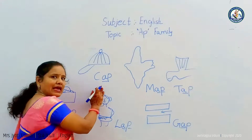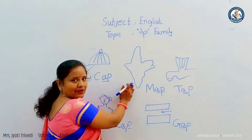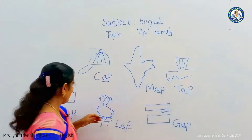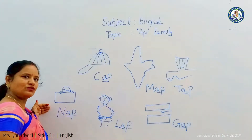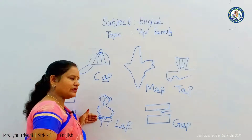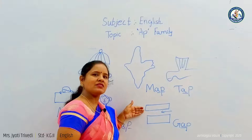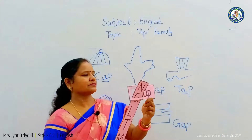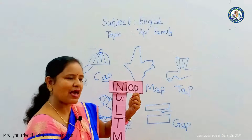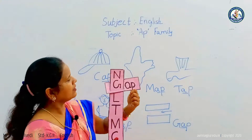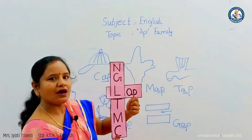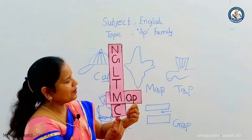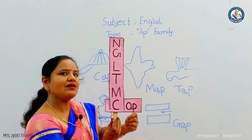So students: C-AP: cap, cap means topi. M-AP: map, map means naksha. T-AP: tap, tap means null. N-AP: nap, nap means sustana. L-AP: lap, lap means godi. G-AP: gap, gap means two cheezon ke beech ka antar. Students, see here — nap, gap, lap, map, cap.